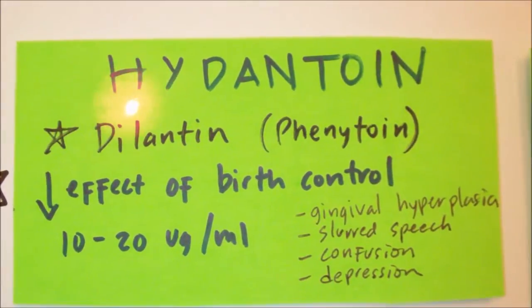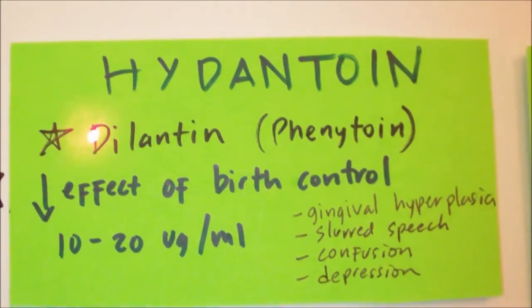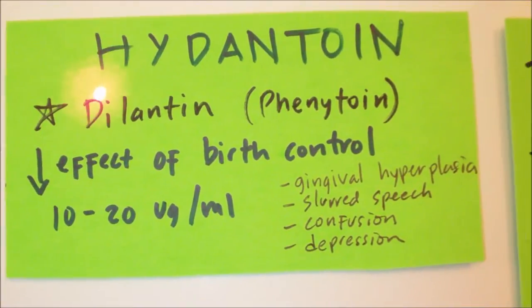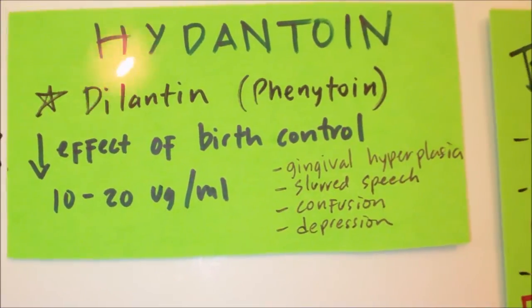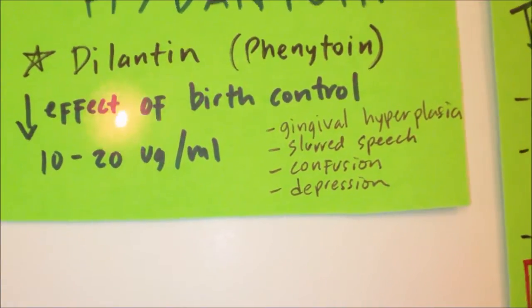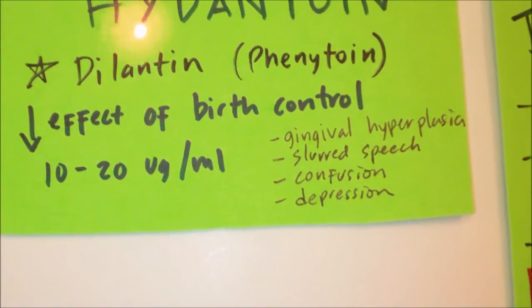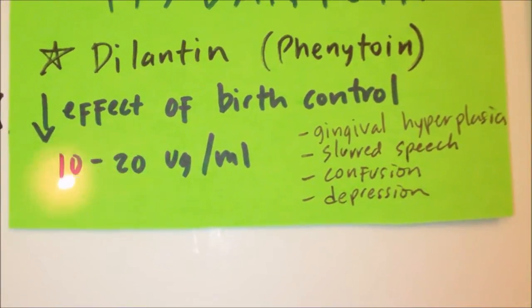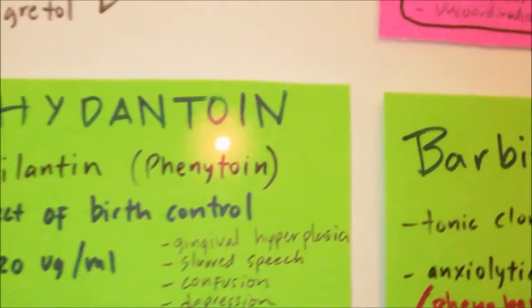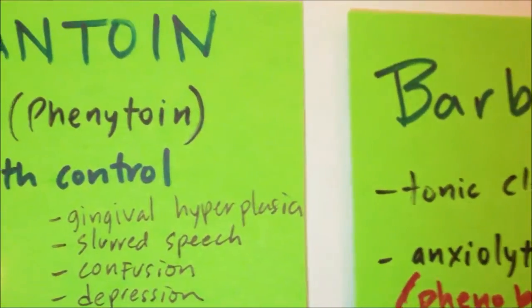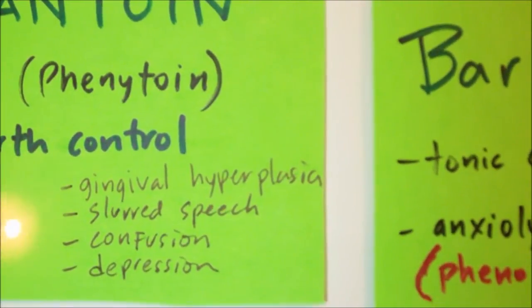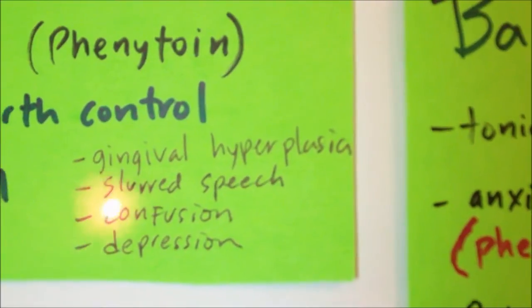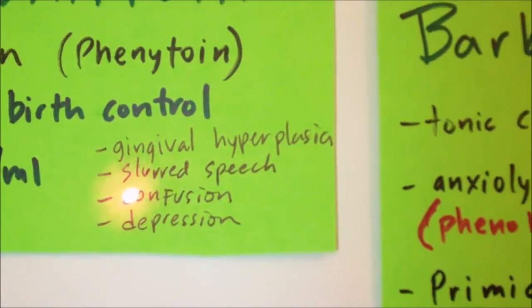What we need to know for the NCLEX with phenytoin or Dilantin is that when giving a patient Dilantin, it is very important to educate the patient that Dilantin can decrease the effects of birth control pills. It is also very important to know the therapeutic levels of Dilantin, which is between 10 to 20 micrograms per milliliter. Side effects of Dilantin can include gingival hyperplasia, which is gums that would bleed easily, slurred speech, confusion, depression, nausea and vomiting, and constipation.